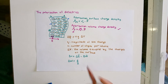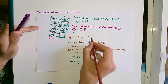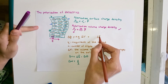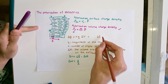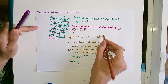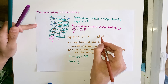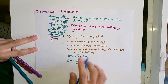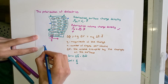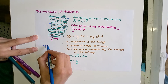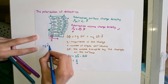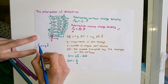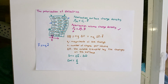Therefore, the volume delta_v is equal to the dot product between the surface area vector delta_s and d, the separation vector inside the dipole. We know that the product nqd is equal to the polarization vector P, so I am going to substitute this into the equation.